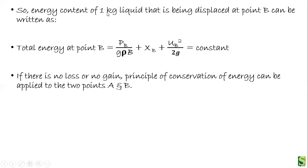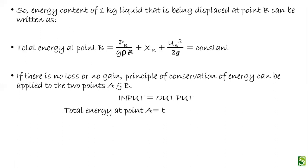This is the pressure energy, potential energy, and kinetic energy possessed by the liquid at point B. Applying the law of conservation of energy, the energy at point B is also constant. If there is no loss or gain, then by the principle of conservation of energy, input equals output — that is, total energy at point A equals total energy at point B.